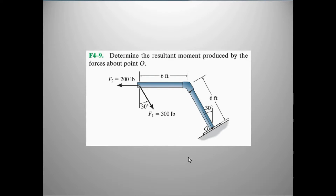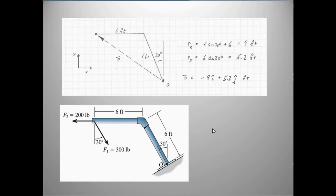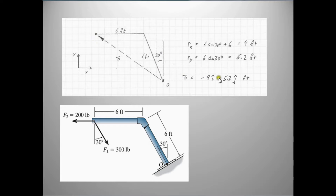Let's take a look at a quick example. We have two forces applied to the same point, and we want to know what kind of moment they result in measured about point O. The first thing we need to do is determine the x and y components of the position vector, which goes from point O to the point of application of the force. R x is 6 feet plus 6 times the sine of 30 degrees, giving a total of 9 feet in the x direction, coming in as negative 9i. R y is 6 times the cosine of 30 degrees, which is 5.2 feet. That gives us the R vector.